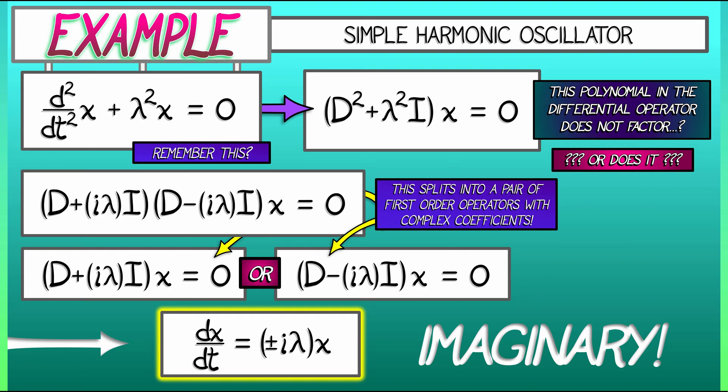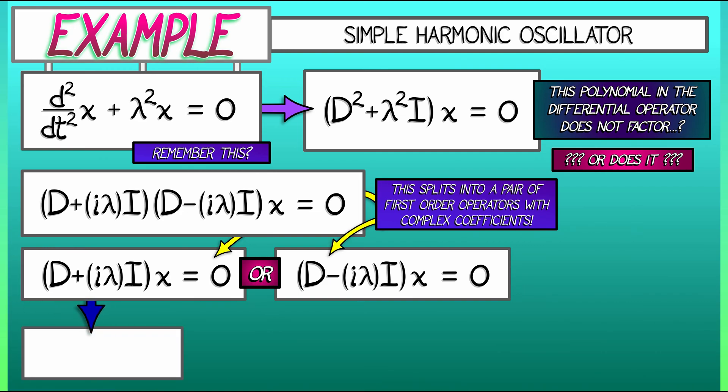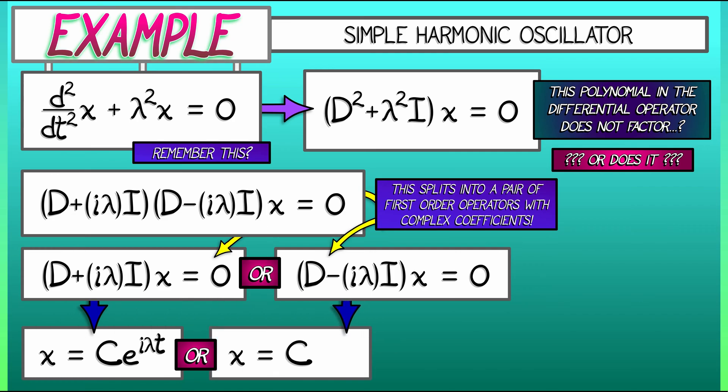What is that going to give us? That's going to give us two potential solutions. The first being some constant times e to the i lambda t, right? It's just whatever that constant is. That constant is i times lambda. Or, or we have the other one where x equals some constant capital C times e to the minus i lambda t. Those are two solutions to this second-order differential equation.